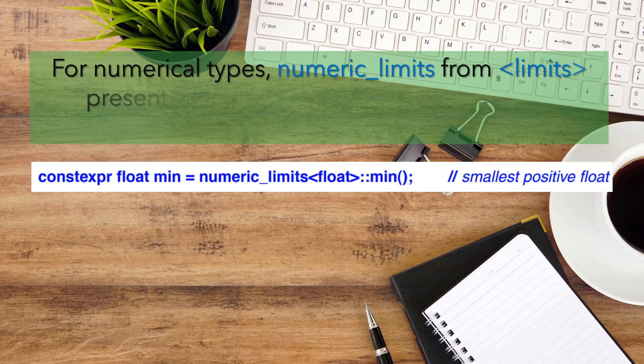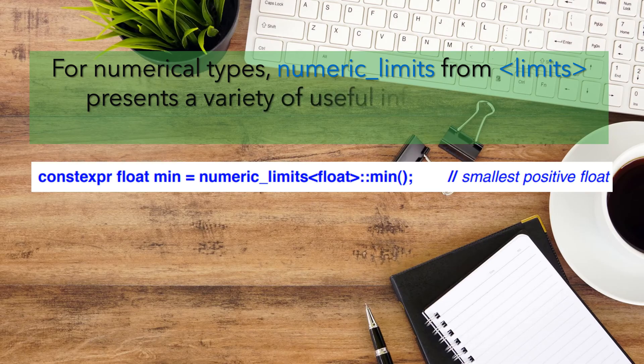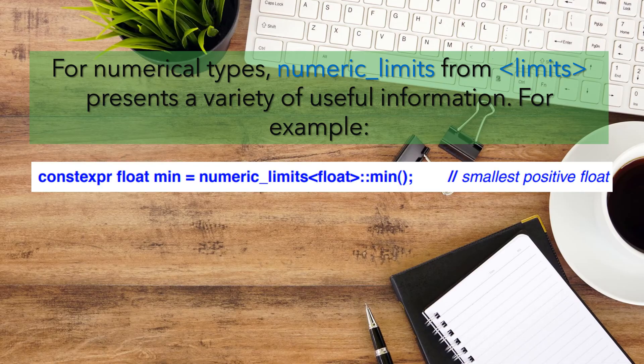For numerical types, numeric_limits from <limits> presents a variety of useful information. For example: constexpr float min = numeric_limits<float>::min(); // smallest positive float